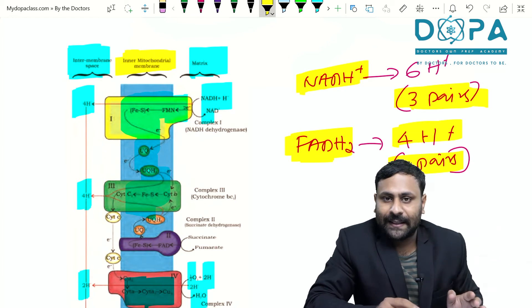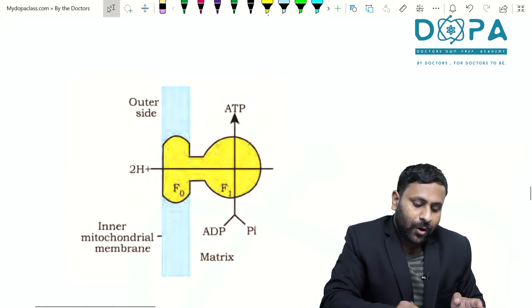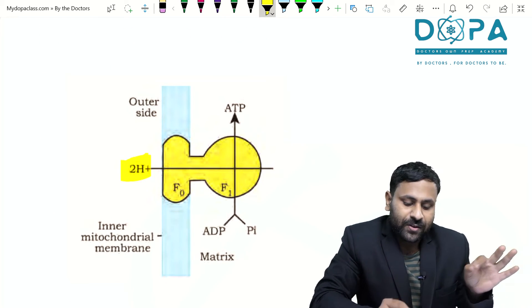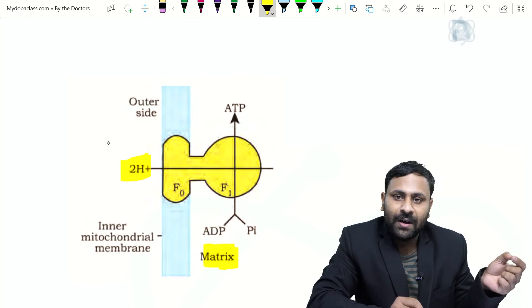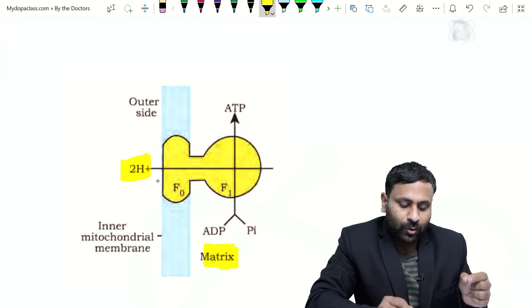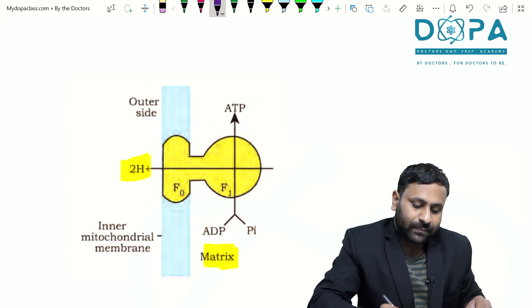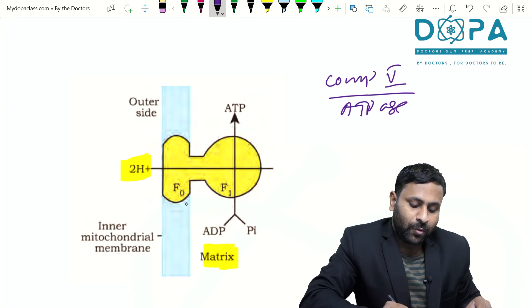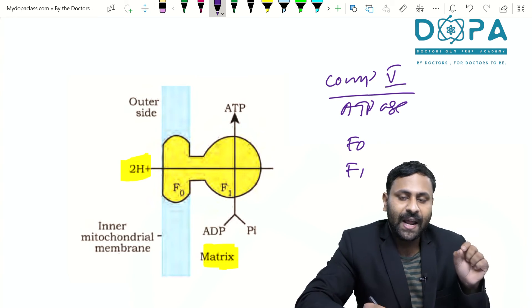This movement of protons is called oxidative phosphorylation. The number of protons is higher on the outer side of the inter membrane space and lower in the matrix, so protons move back from the inter membrane space to the matrix through a channel called ATPase, or complex five. Complex five consists of two parts: F₀ and F₁. F₀ is called the tail and F₁ is called the head.